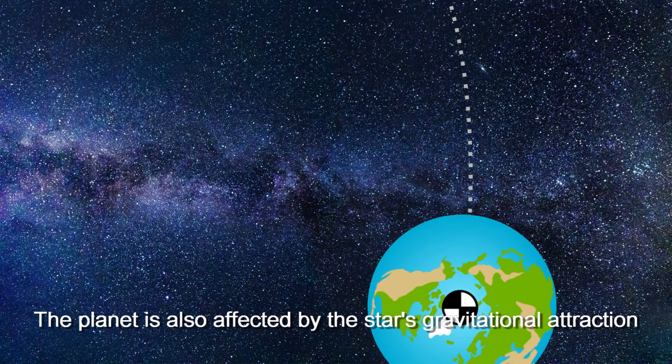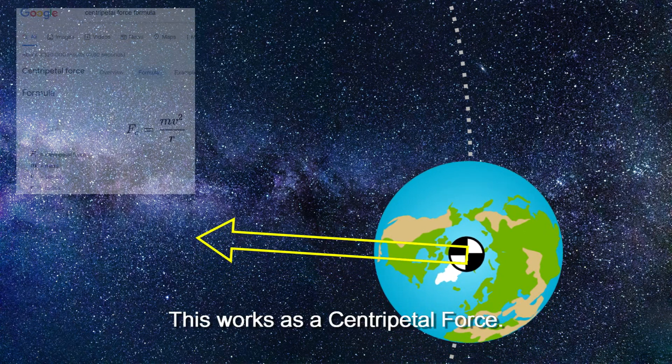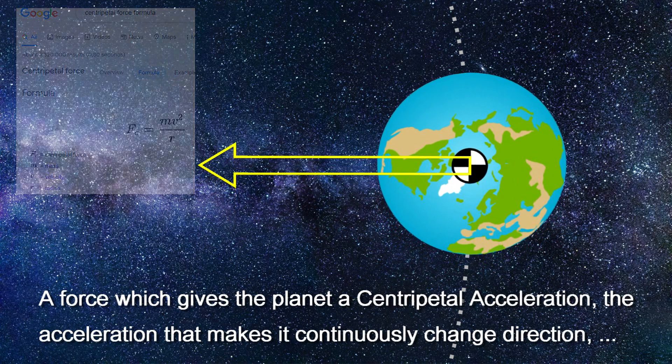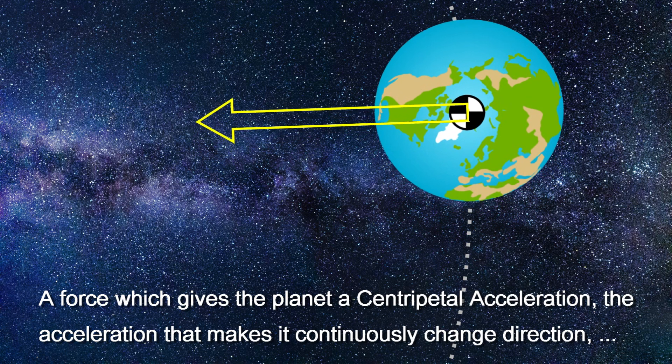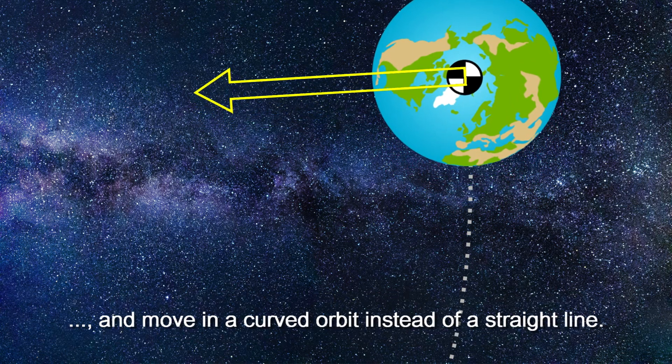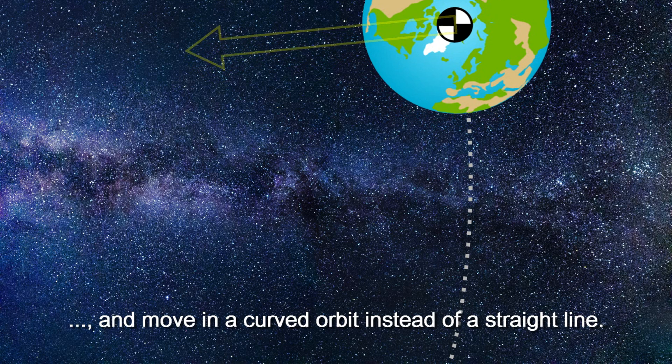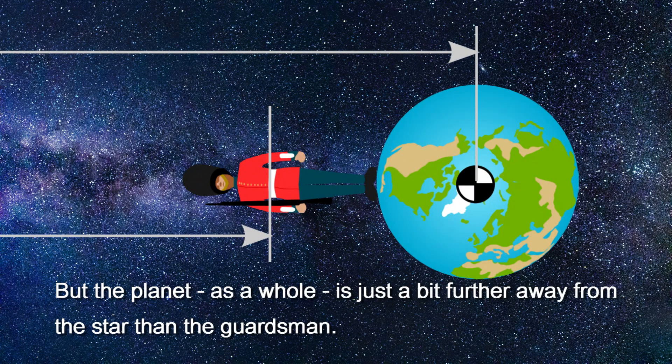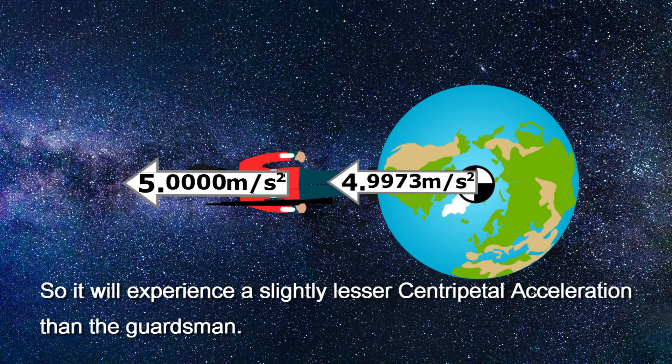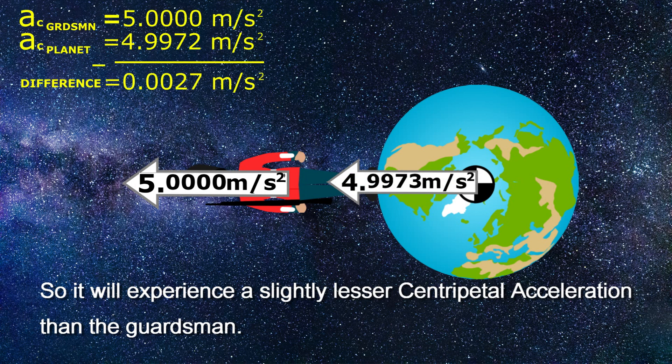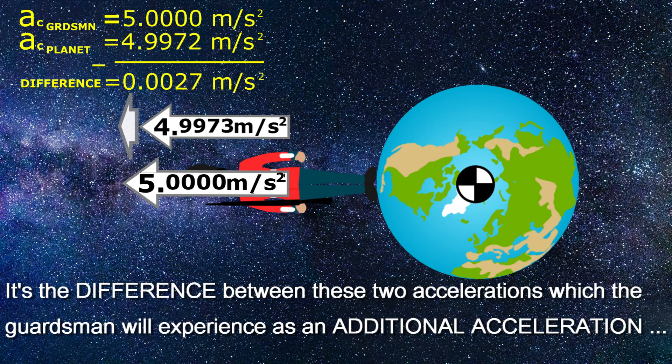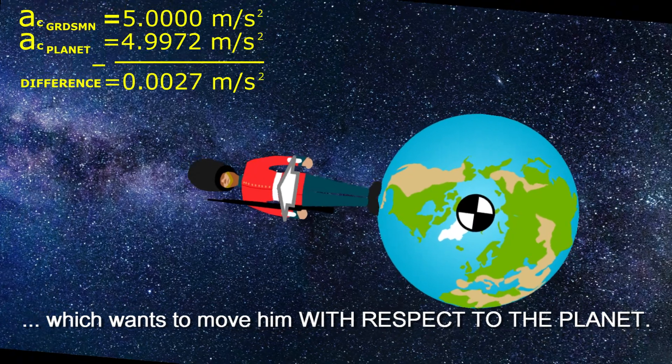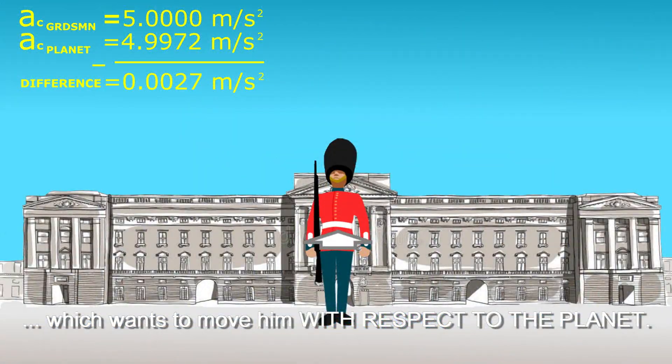The planet is also affected by the star's gravitational attraction. This works as a centripetal force, the force that gives the planet the centripetal acceleration, the acceleration that makes it continuously change direction and move in a curved orbit instead of a straight line. But the planet as a whole is just a bit further away from the star than the guardsman. So it will experience a slightly lesser centripetal acceleration than the guardsman. It's the difference between these two accelerations which the guardsman will experience as an additional acceleration which wants to move him with respect to the planet.